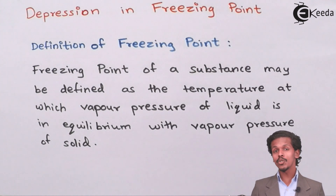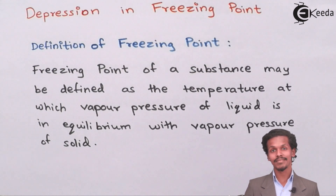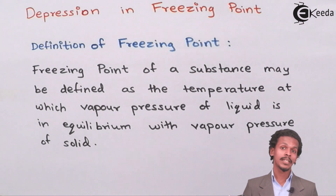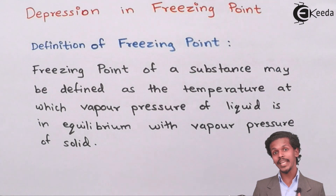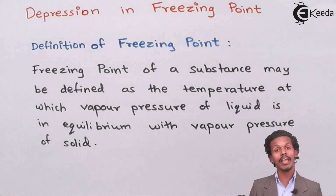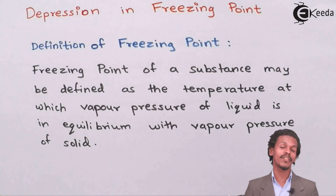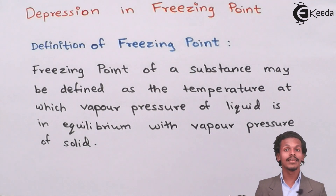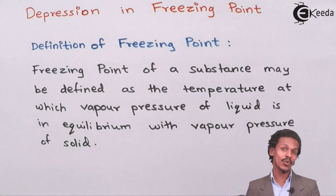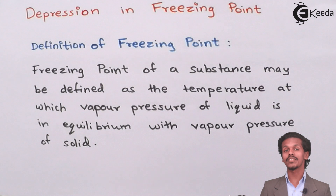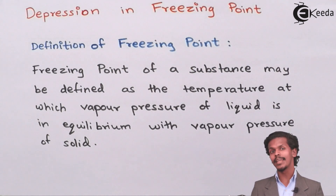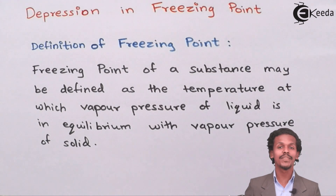It's very simple. Since you know the solid has no vapor pressure, we have to reduce the vapor pressure of a liquid such that it reaches zero vapor pressure or is in equilibrium with the solid — meaning we are converting the liquid into a solid. The temperature at which this conversion occurs is known as the freezing point.